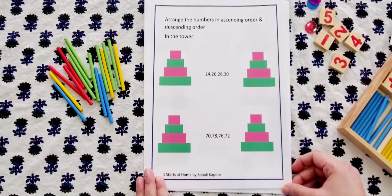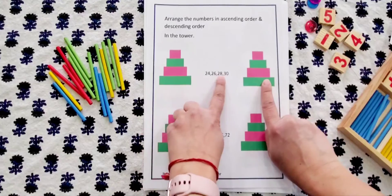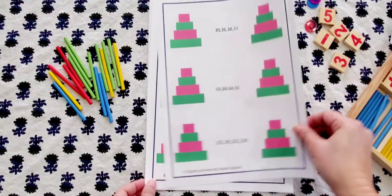Arrange the numbers in ascending and descending, so here you do ascending, here you do descending. The numbers are right here so you have a lot to do for practice.